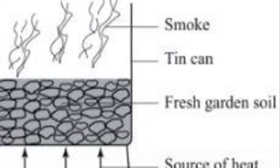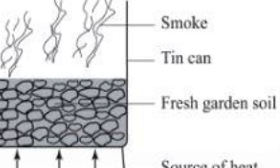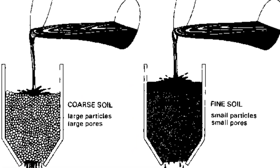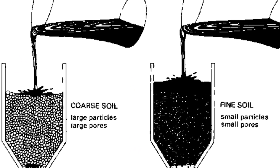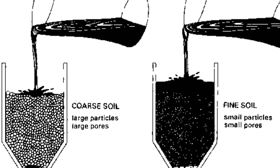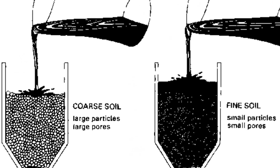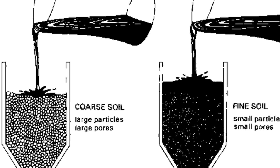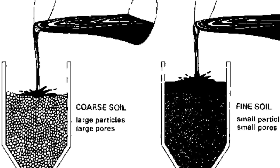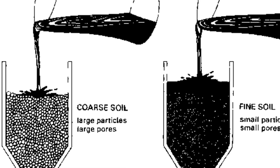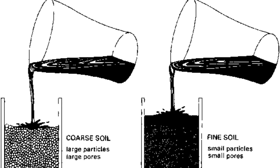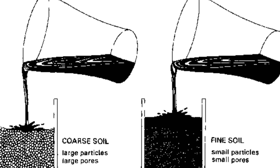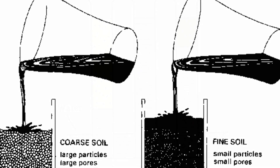The decrease in mass gives us the amount of air that was in the soil. Water retention and drainage are two sides of the same coin. To measure these, we saturate a soil sample, then allow the excess water to drain. The remaining water is what the soil retains. If a lot of water drains away, the soil has good drainage but poor water retention.